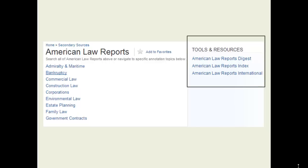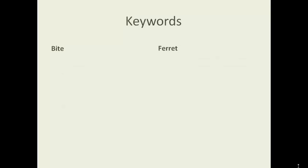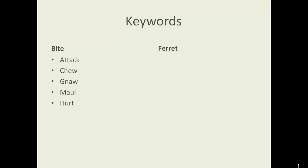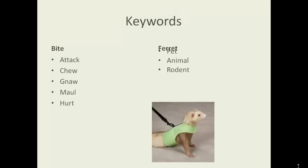Let's think about a situation where you have a client who is bitten by her friend's pet ferret. Think about the different ways you can describe 'bite,' and the different ways you can describe a 'ferret.' Look at these words and identify which ones are more specific — those are the ones to start with. Keep in mind that your words might change as you do more research. They might expand, contract, or change completely. For example, you might learn that a ferret is not a rodent, but belongs to the weasel family instead.